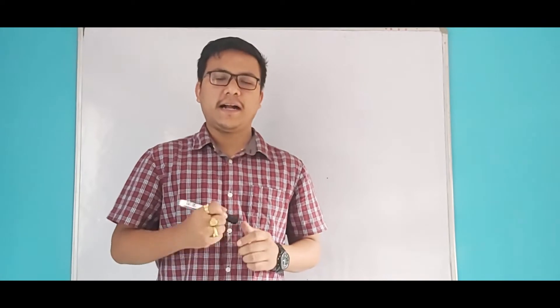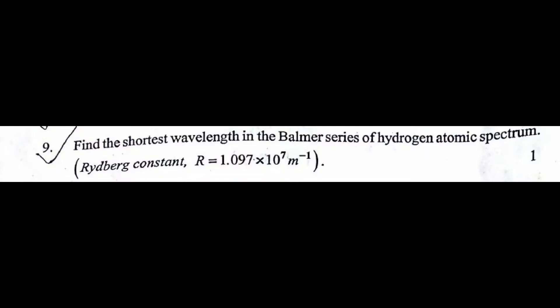Welcome back to my channel. In this video, I am going to talk about physics class skills council exam 2020. So to start with, let's see the first question. Find the shortest wavelength in the Balmer series of hydrogen atomic spectrum.